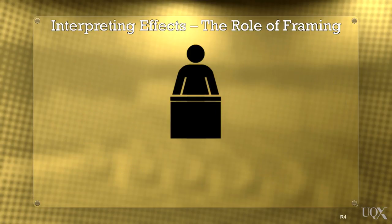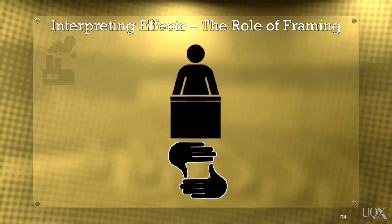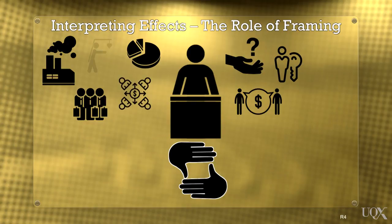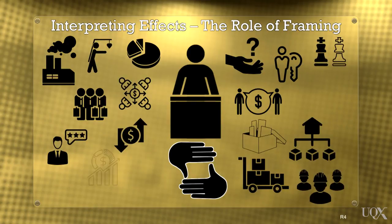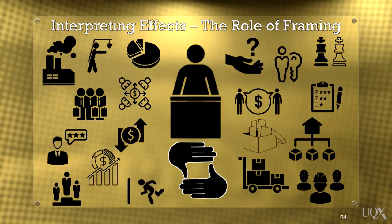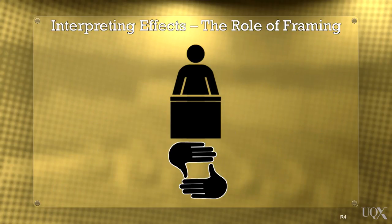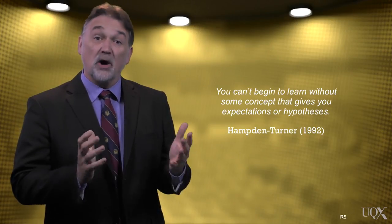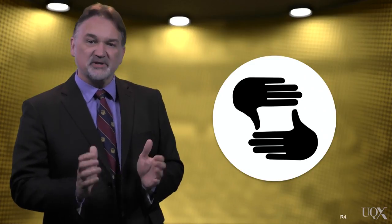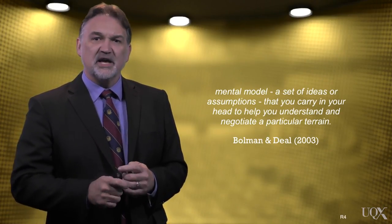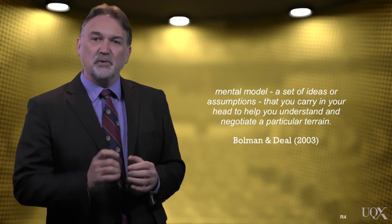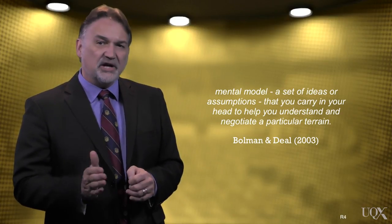Bollman and Deal suggested that the reason behind the often catastrophic failures of organisations and their leaders is that they fail to see what is right in front of them. That is to say that, even if they had quality information on all of the things we have just considered, they cannot make an accurate assessment of their effects upon the organisation and therefore proceed to make poor decisions. Bollman and Deal note that what is required is a mechanism for organising and analysing all of this data. Relating it to the vision is the start, but we need to consider its effect from multiple points of view. Hampton-Turner states that you can't begin to learn without some concept that gives you expectations or hypotheses. Bowman and Deal suggest that one such concept is framing, which they define as a mental model — a set of ideas or assumptions that you carry in your head to help you understand and negotiate a particular terrain. It can be likened to pattern recognition.